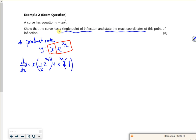So dy by dx is, now if I take out the e to the x over 2 as a factor, I've got a half x plus 1 times e to the x over 2.